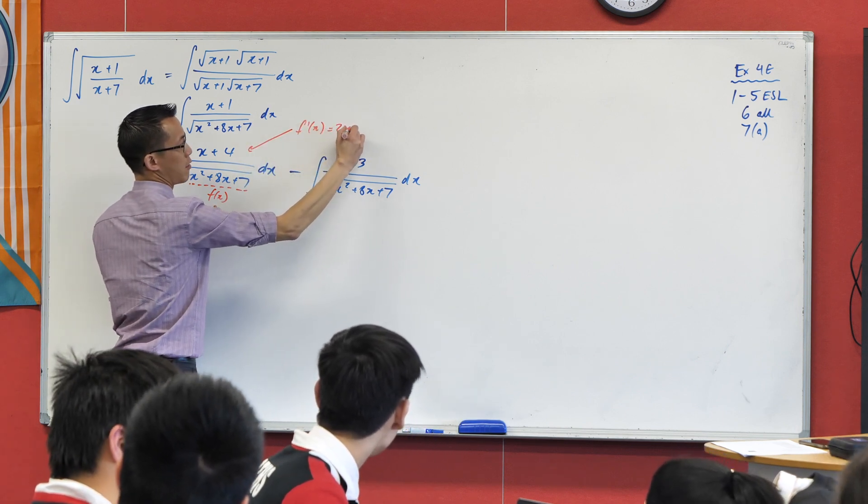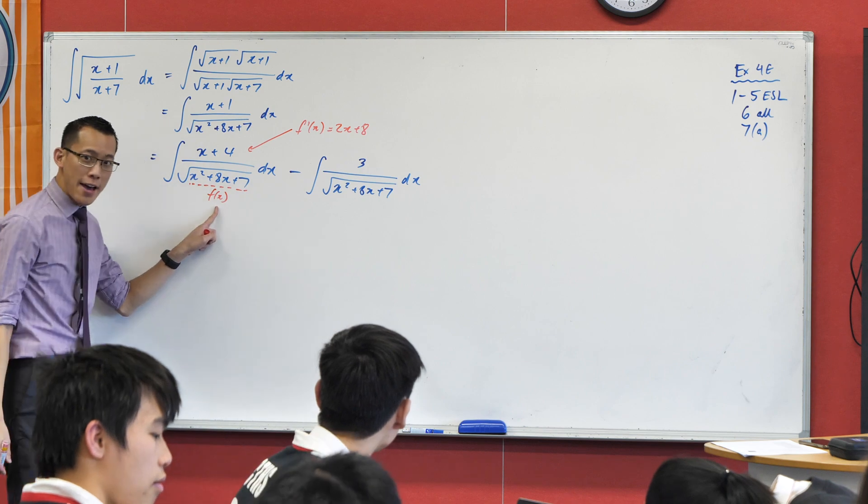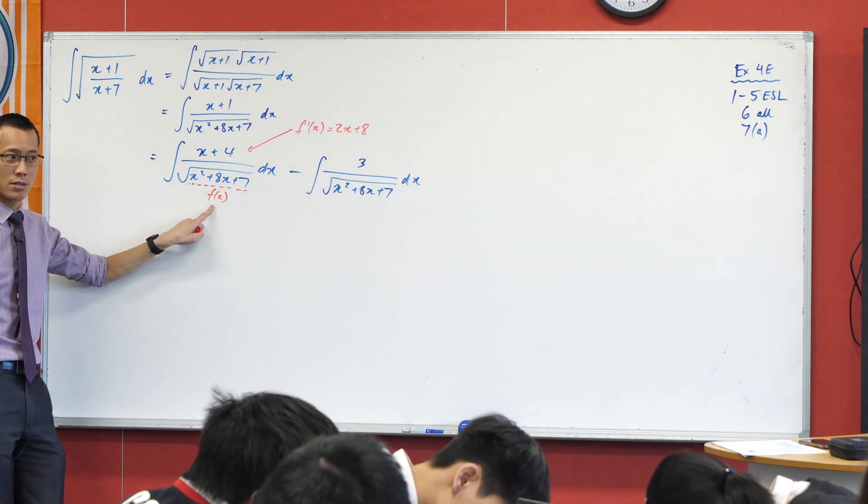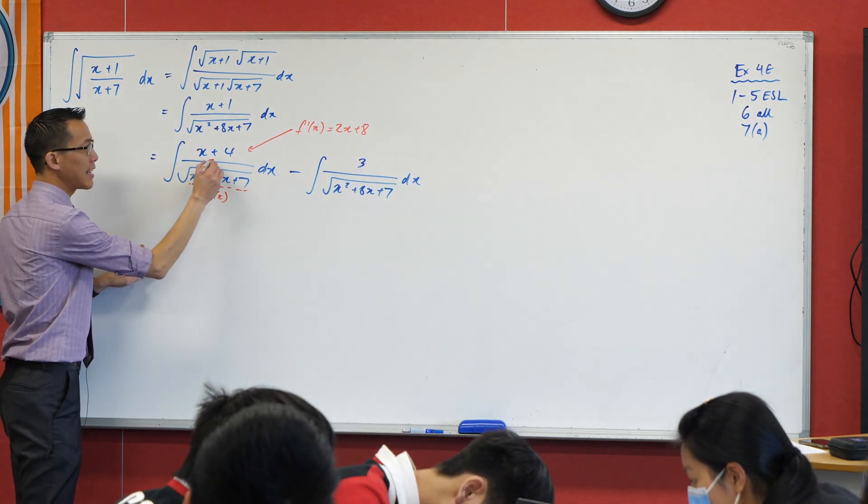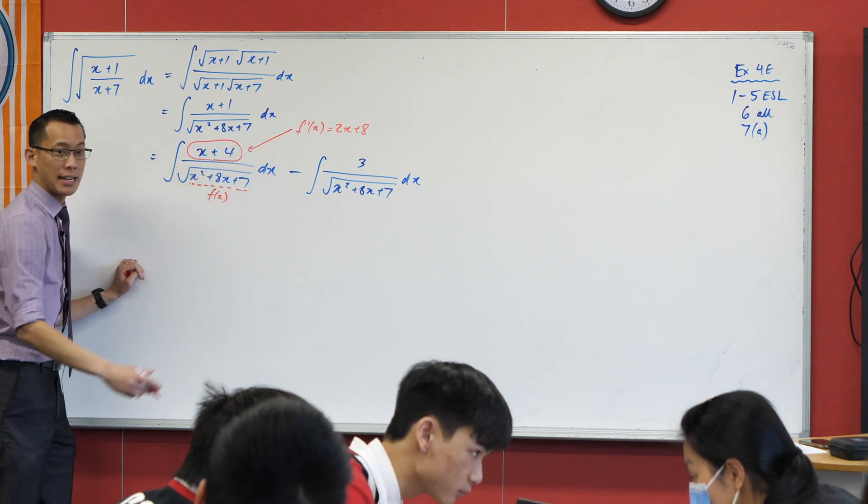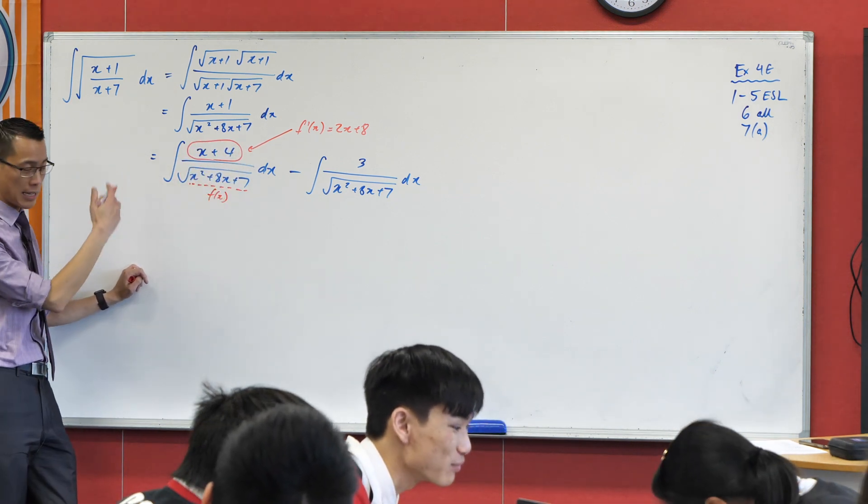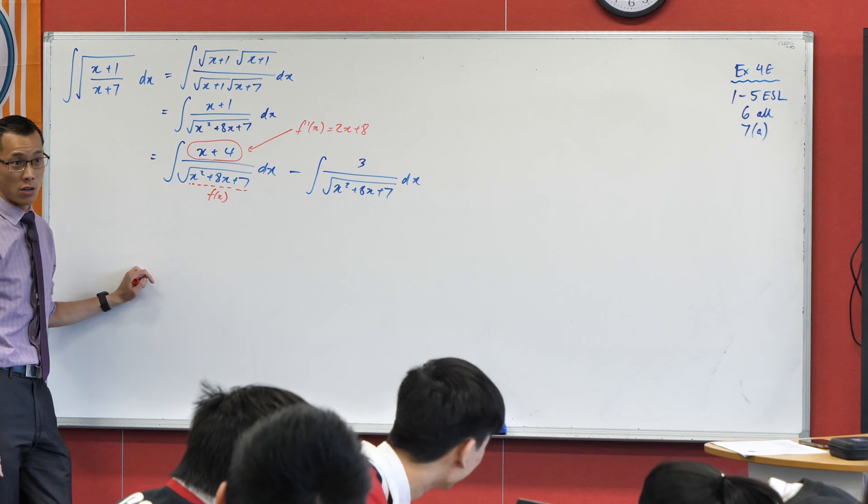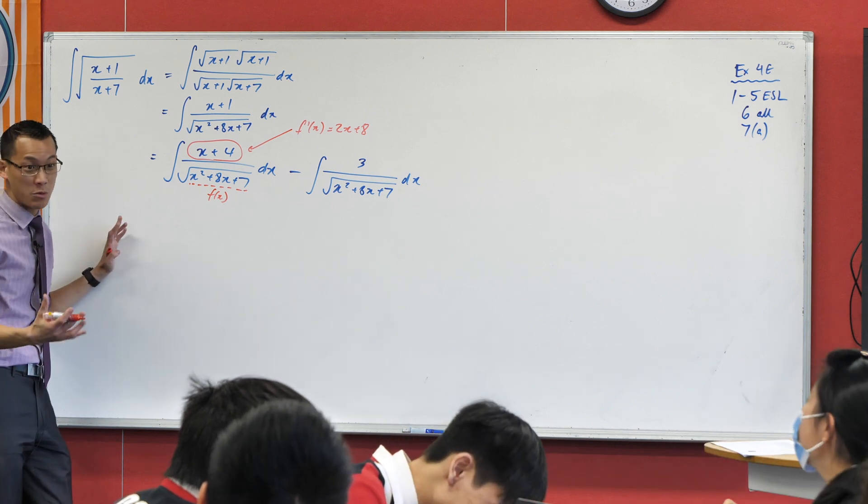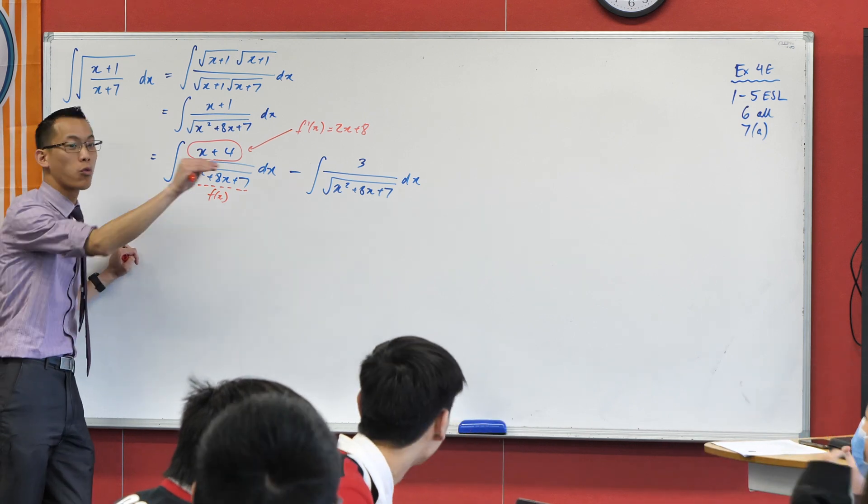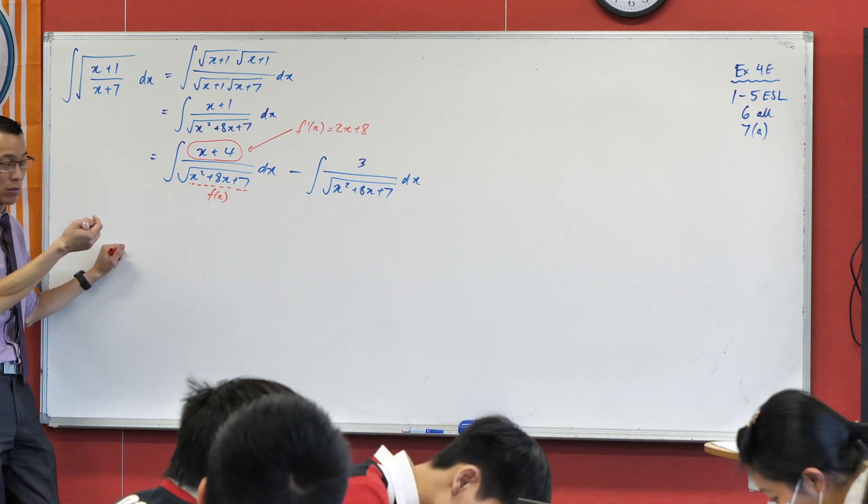2x plus 8. Maybe you want to jot this down as a note for yourself, right? If f' of this f is 2x plus 8, then if I can get something that looks like 2x plus 8 in here, in this case it's just off by a constant coefficient, then that's really good. That's really good for me, right? This is going to walk right into my reverse chain rule, okay?